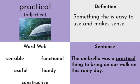Coming into our final three words, we've got another adjective: practical. Practical's definition is something that is easy to use and that makes sense. Word web words: sensible, functional, useful, handy, and constructive. Also, efficient from earlier in this lesson is kind of a synonym of practical — it just makes something easier or makes sense. Our sentence: the umbrella was a practical thing to bring on our walk on this rainy day. It means it made sense — it was a good idea.